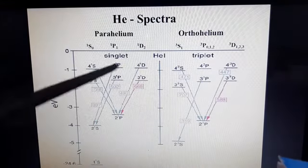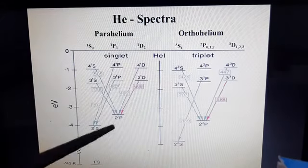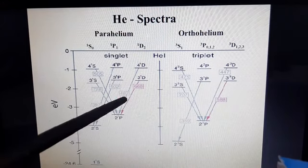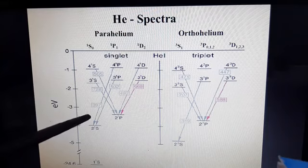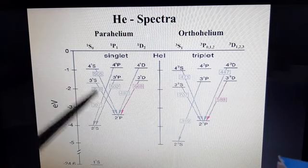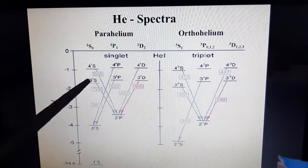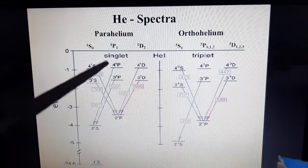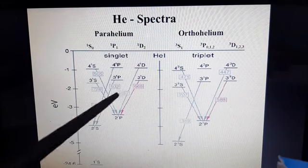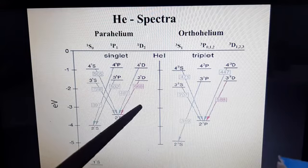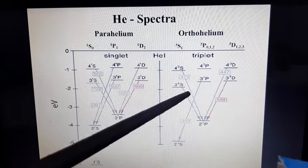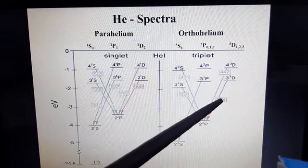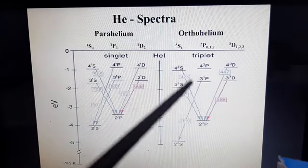These are the different energy levels based on LS coupling. Transitions of electrons are possible according to selection rules: Δl = 0, ±1. The electron can jump from the s state to the p state — the difference between s and p is 1, satisfying the selection rule. Similarly, p to s transitions are allowed. The energy emitted during these transitions produces the parahelium spectra and orthohelium spectra respectively.